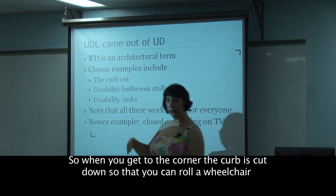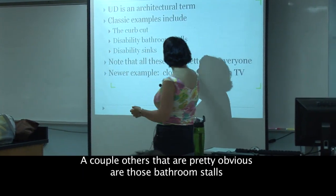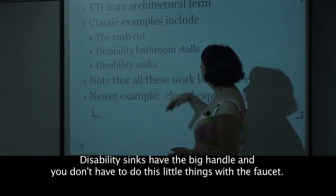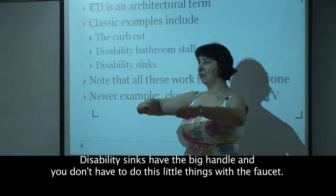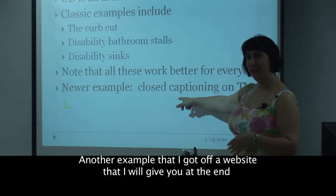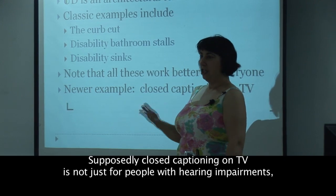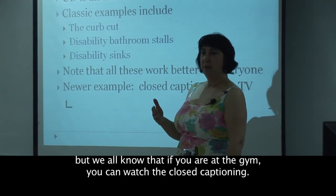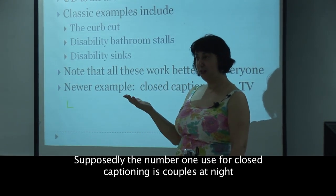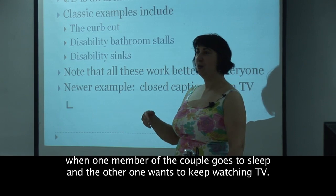Other examples include wheelchair-accessible bathroom stalls and disability sinks with big handles so you don't have to fiddle with the faucet. Another example is closed captioning on TV — supposedly it's not just for people with hearing impairments. You can watch it at the gym. And apparently, the number one use for closed captioning is couples at night when one member goes to sleep and the other wants to keep watching TV.